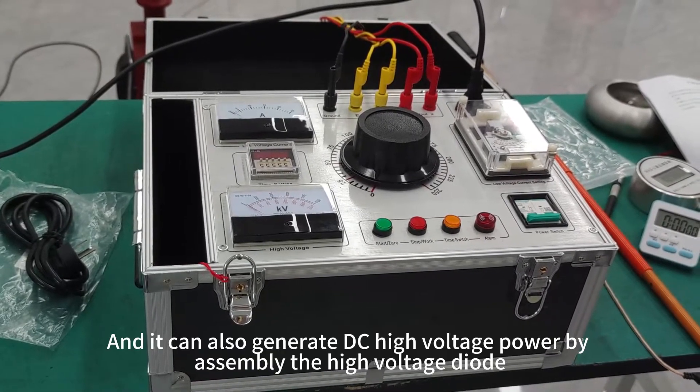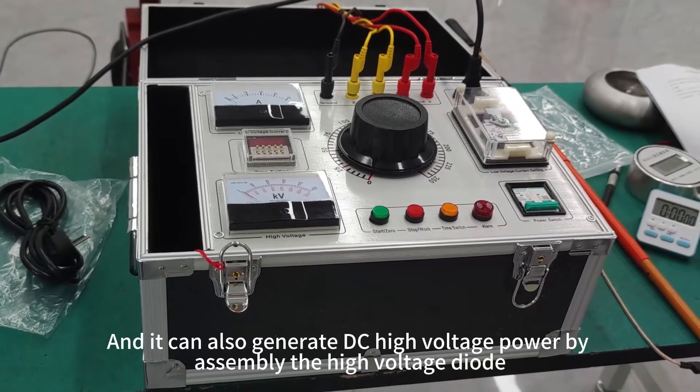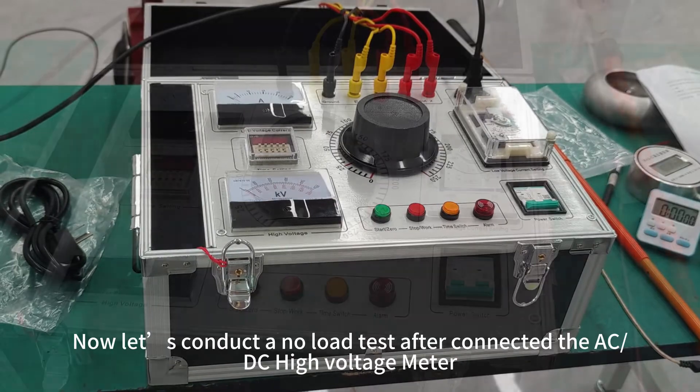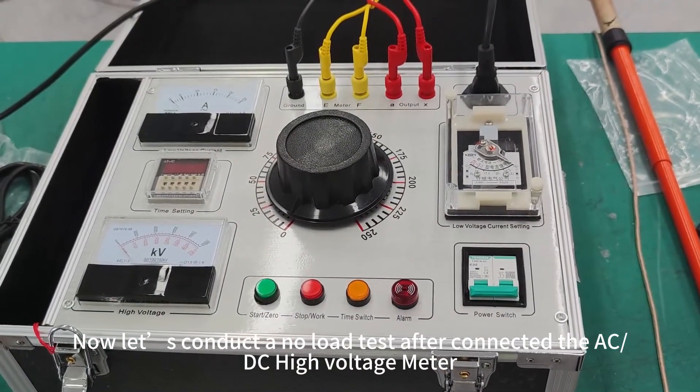And it can also generate DC high voltage power by assembling the high voltage diode. Now let's conduct a no-load test after connecting the AC or DC high voltage meter.